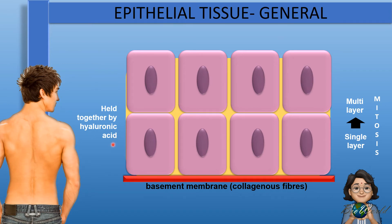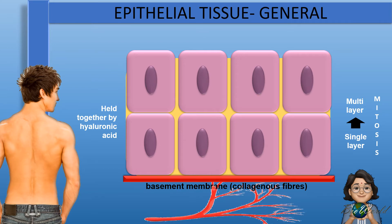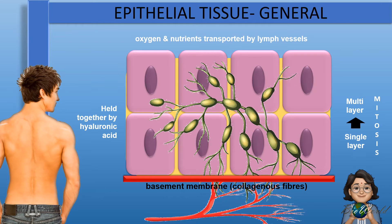It is important to note that the epithelial tissues do not have blood vessels, because the blood vessels are below the basement membrane. However, this layer of tissue still receives oxygen and nutrients with the help of the lymphatic vessels.